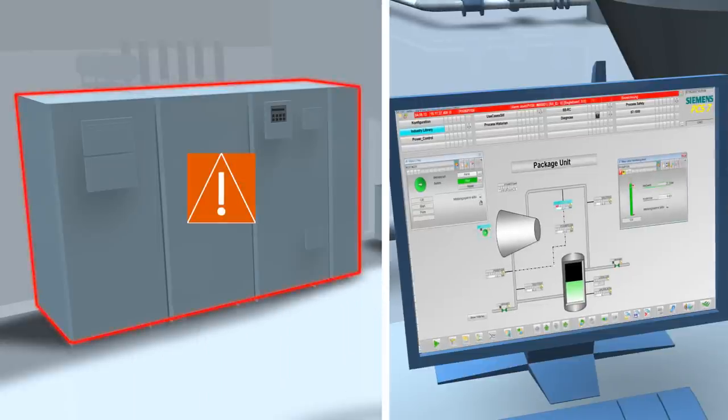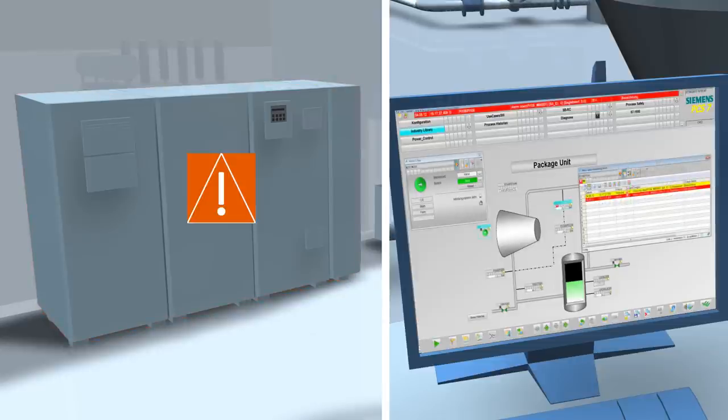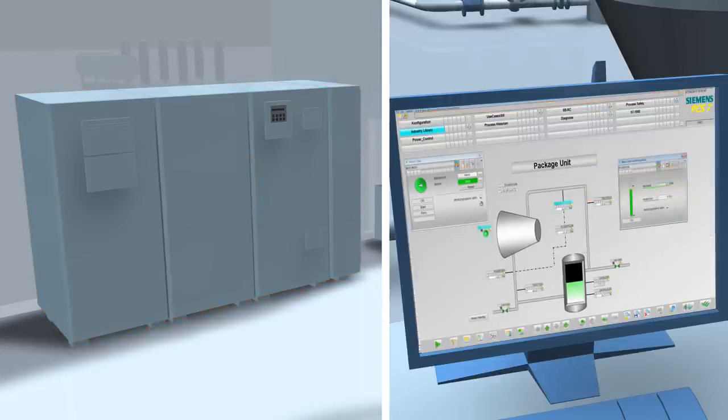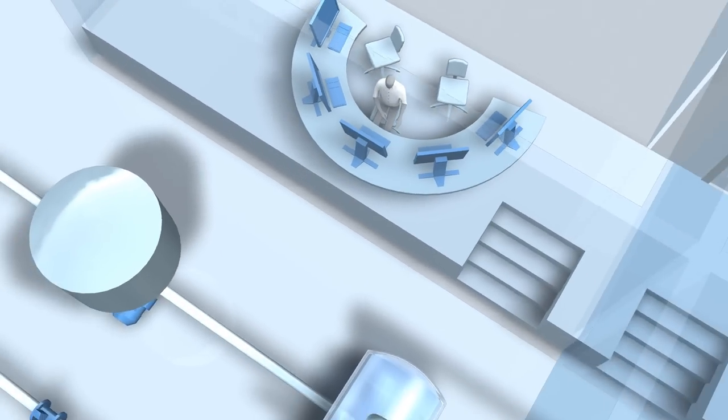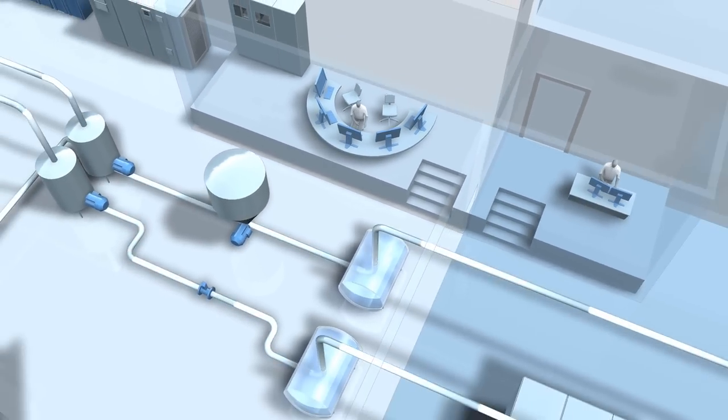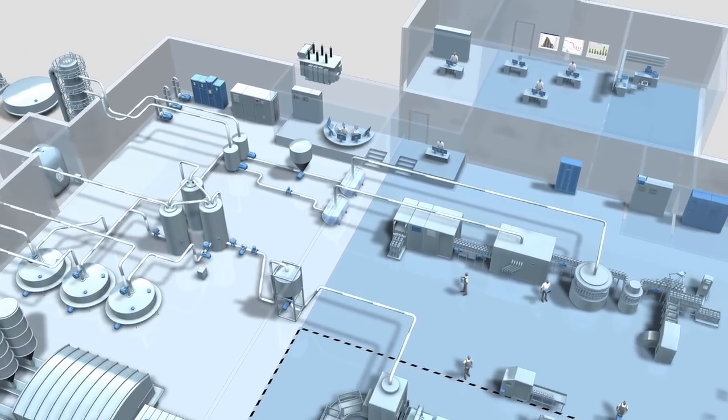The operator is directed selectively to alarms and acknowledges the messages. With the Industry Library, you increase the level of integration of your automation system. It helps you avoid operator errors and thus also contributes to increased operational efficiency.